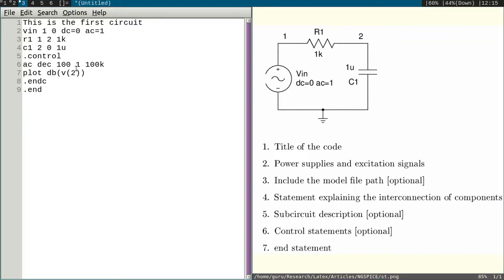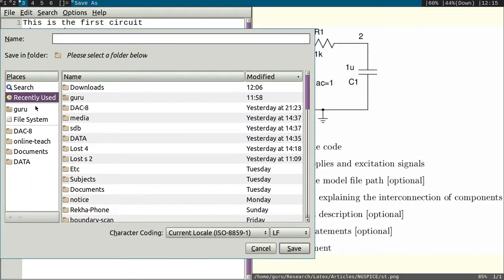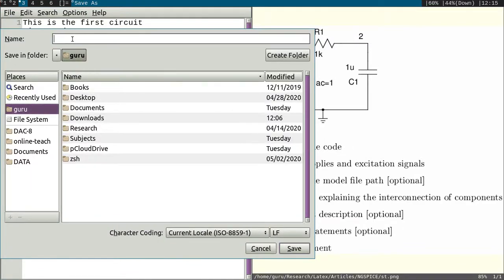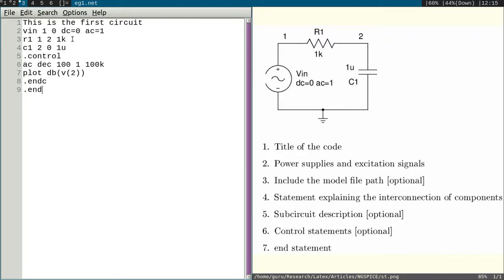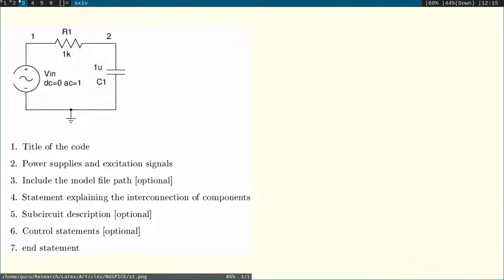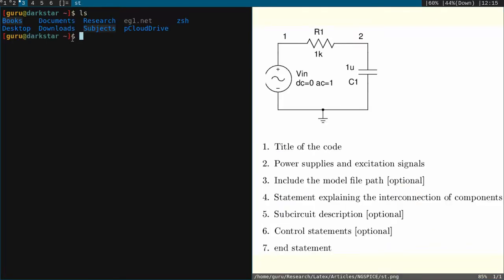This is the code for this circuit. Now we will save it. I will save in the home folder. The extension you can give either CIR or NET or SPI. I will use dot NET. Save. Now let us go to that folder where it is stored, and in my case it is a home folder. You can see here EG1 dot NET. Now you simply write ngspice space name of the file, that is EG1 dot NET.